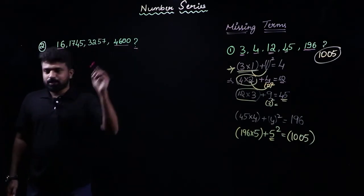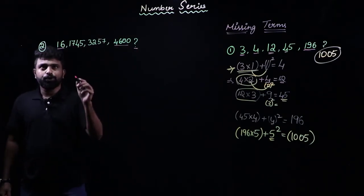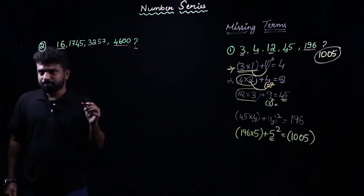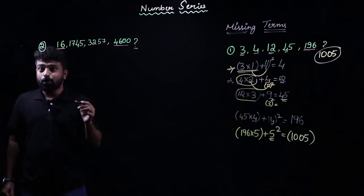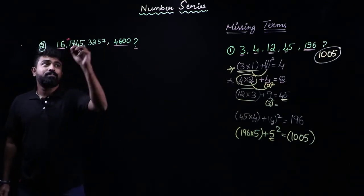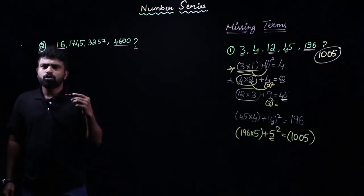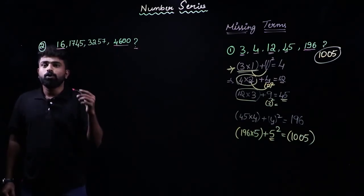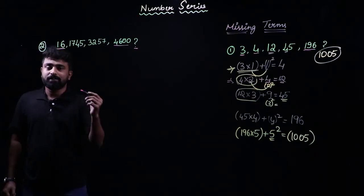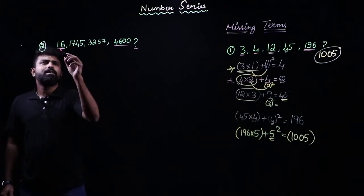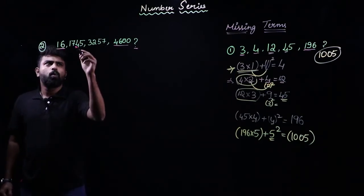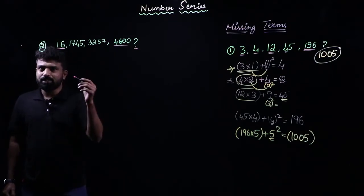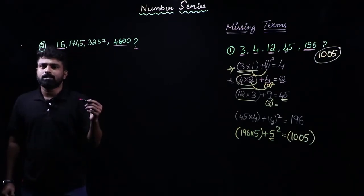When you see such a series, you take the difference between the first term and the last term. You observe that the difference is very huge. Whenever the difference is very huge, you go with either multiplication or division. Since the terms are increasing, you try multiplication. But the units place of 16 is 6 and the next term ends in 5 — no matter what you multiply 6 by, you don't get 5, so multiplication doesn't work here.